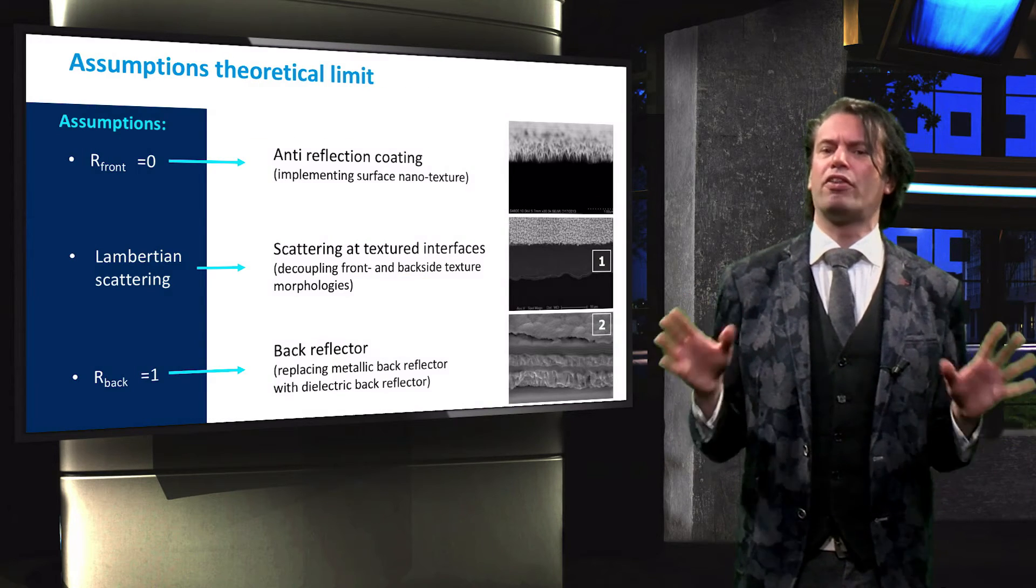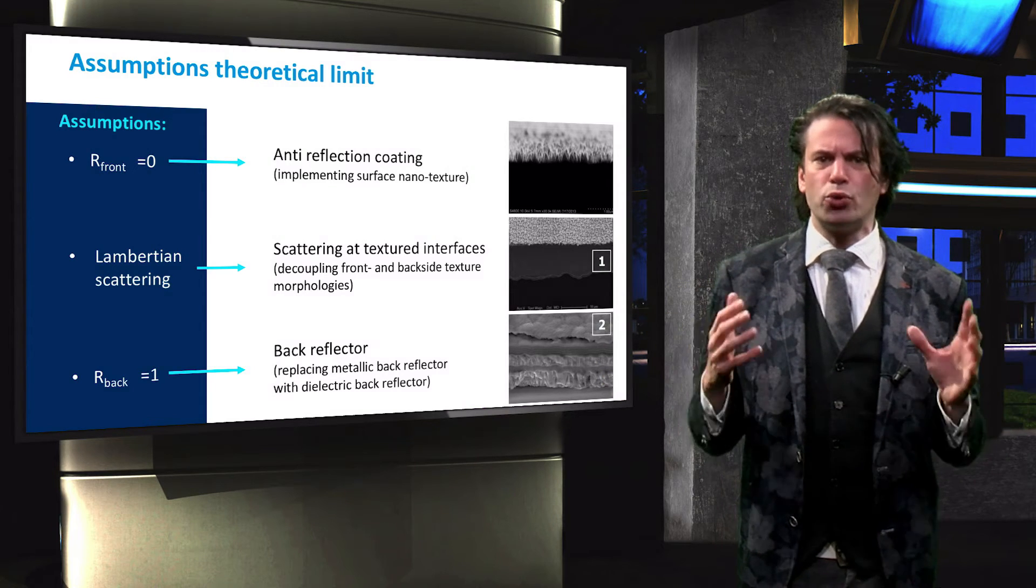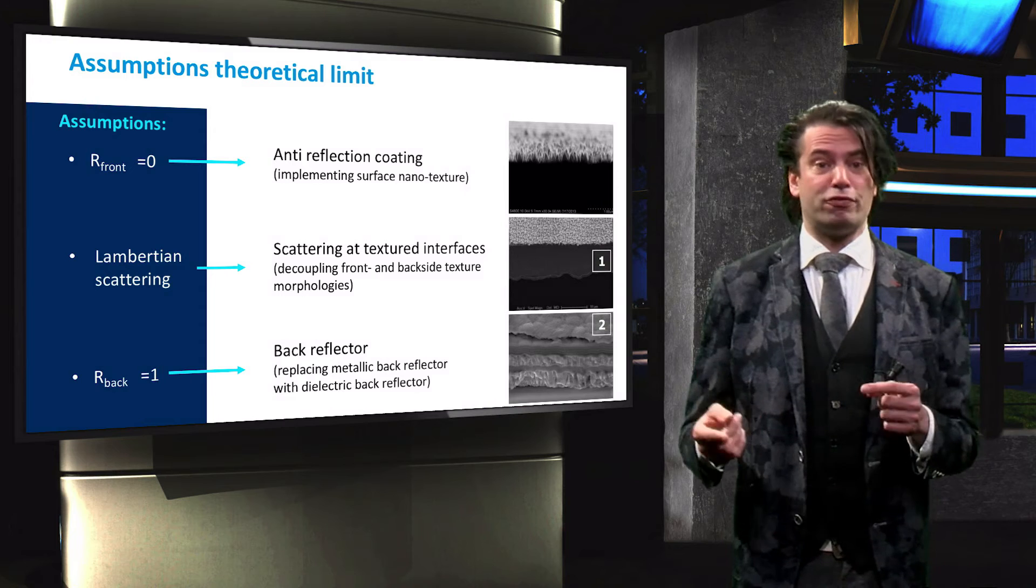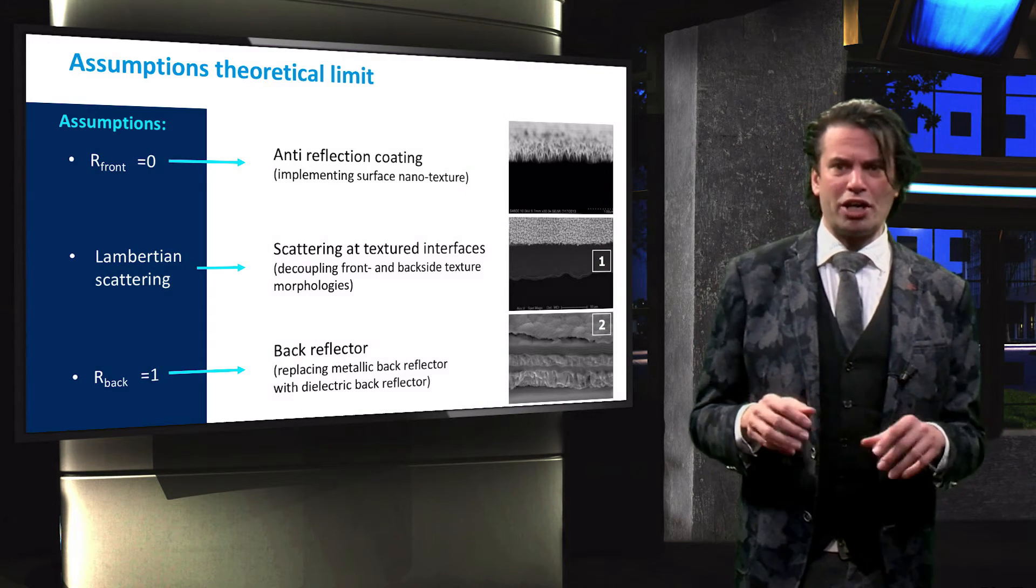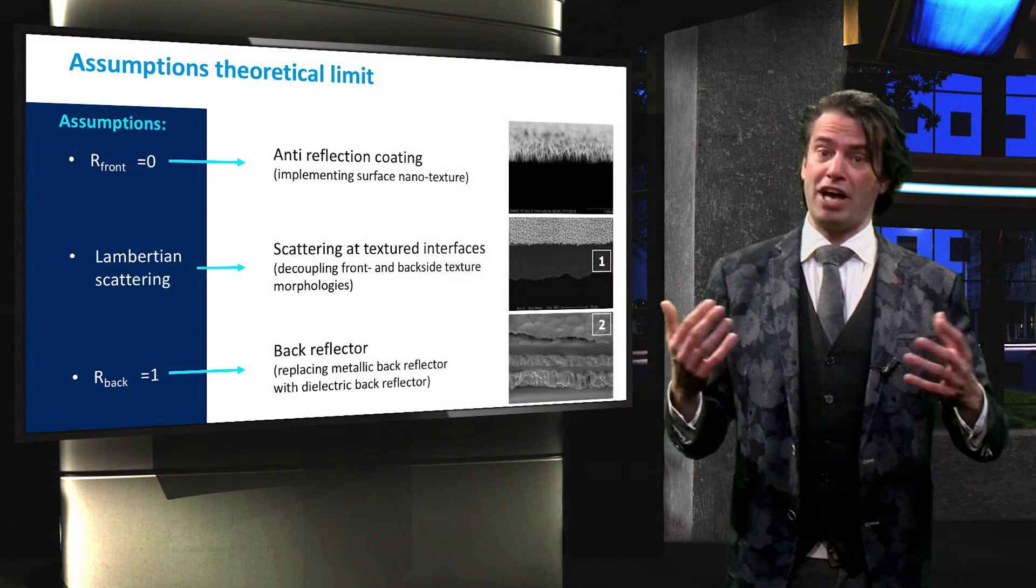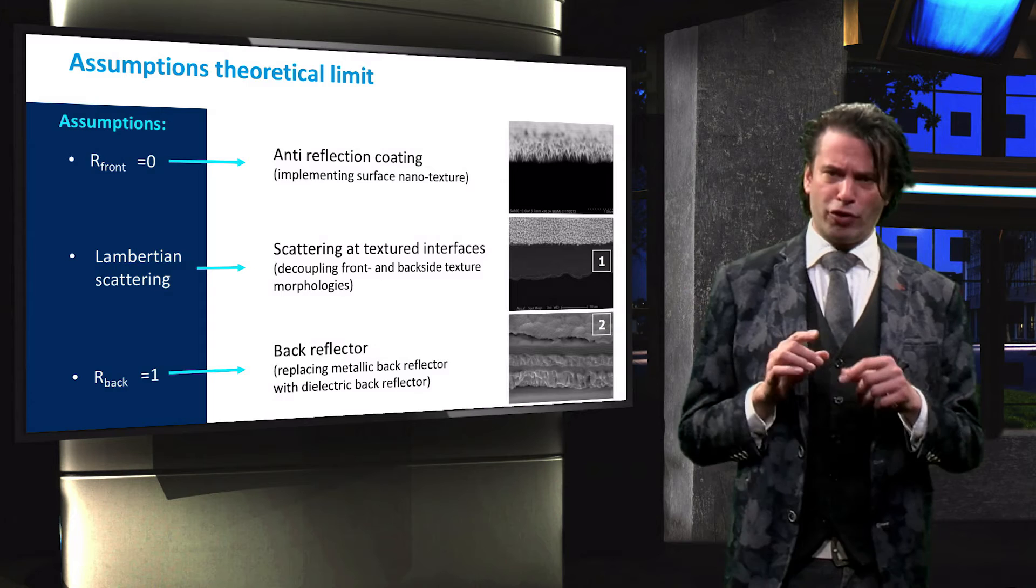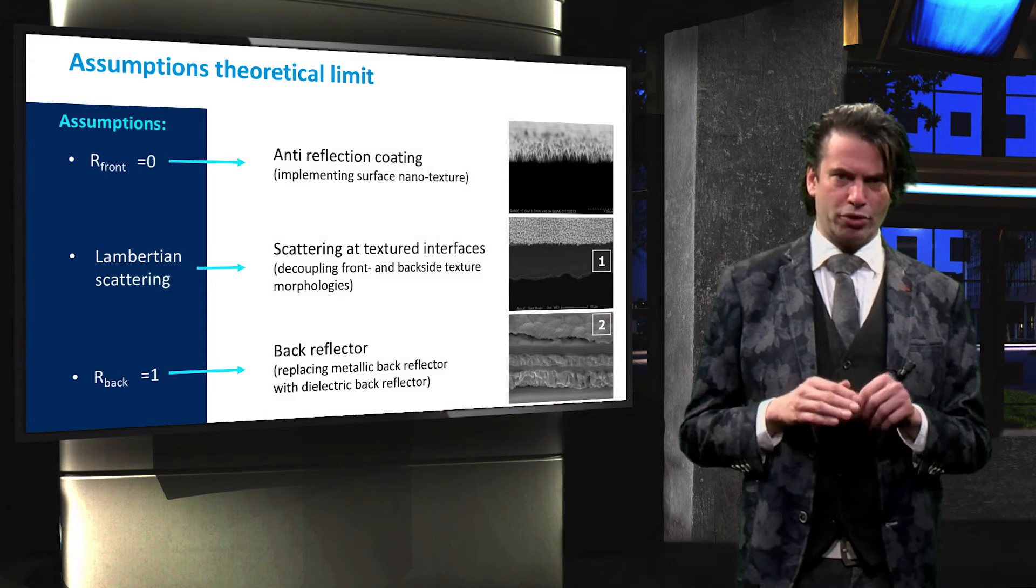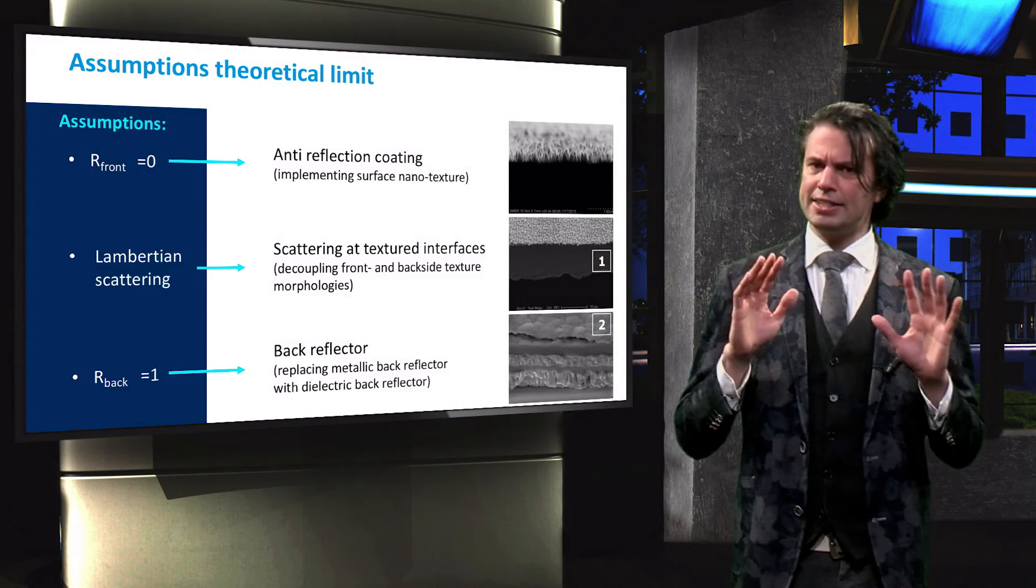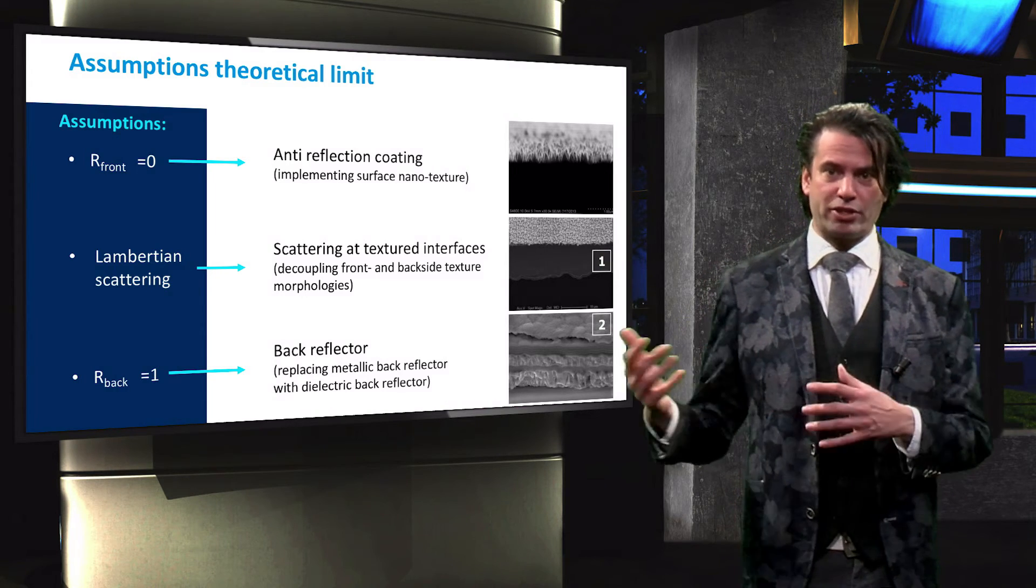The Yablonovitch limit is based on three assumptions. These assumptions are among the main light management goals we work towards in order to maximize the absorption in solar cells. Firstly, the reflection at the front of the surface equals zero, so that all light is transmitted into the cell. This we try to achieve through the use of anti-reflection coatings, as discussed in preceding sections. The second assumption is that the front surface is a Lambertian scatterer, so that the light intensity is divided evenly over all outgoing angles. This scattering is improved through the use of interface texturing, targeting specific spectral ranges.